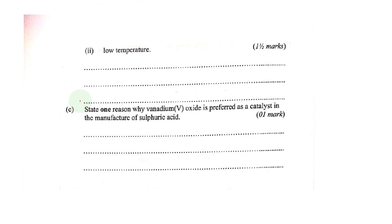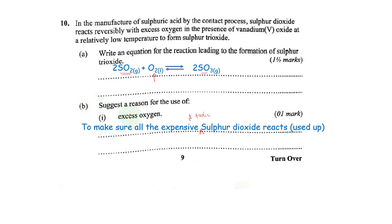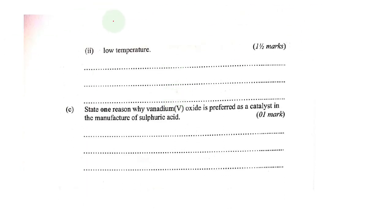They're also asking suggest a reason for the use of low temperature. Whenever you have a reaction, our previous reaction also tends to release heat. If you have a reaction between A and B to produce C with evolution of heat, meaning this reaction is actually exothermic.